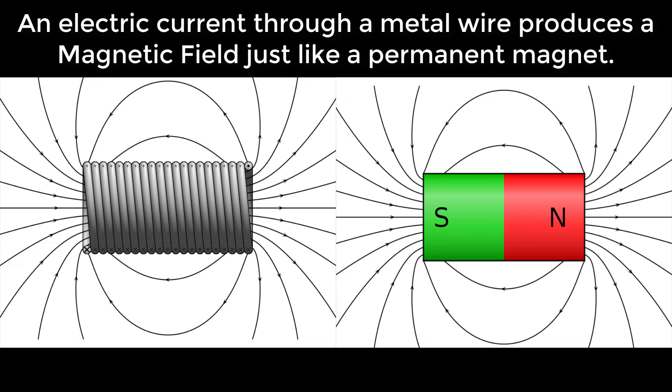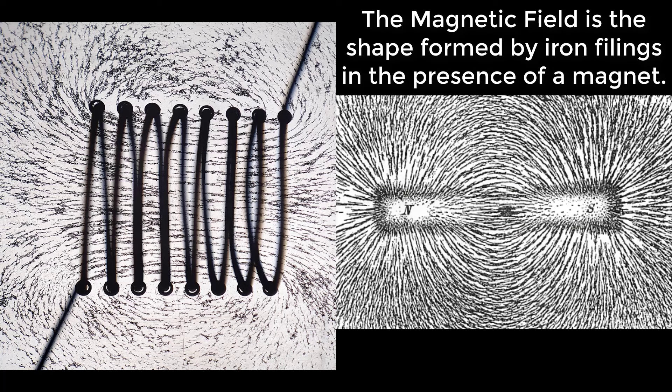An electric current through a metal wire produces a magnetic field just like a permanent magnet. The magnetic field is the shape formed by iron filings in the presence of a magnet.